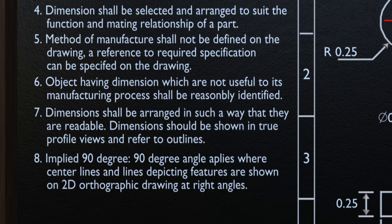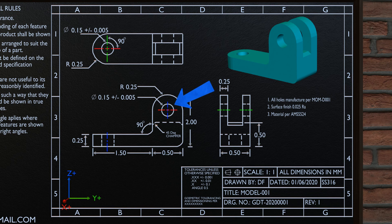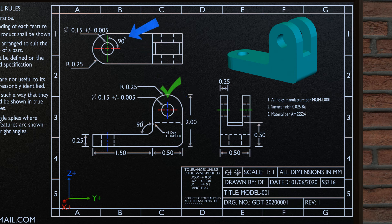The eighth fundamental rule says a 90-degree angle applies where center lines and lines depicting features are shown on the 2D orthographic drawing at right angles. When we consider these center lines — x-axis in red and z-axis in blue — it is understood that they are at a 90-degree angle, so there is no need to mention the angle. So when we mention the angle explicitly, it is not in line with this fundamental rule of implied 90 degrees. Similarly, for edges depicted at 90 degrees, there is no need to mention the angle as it is already understood.